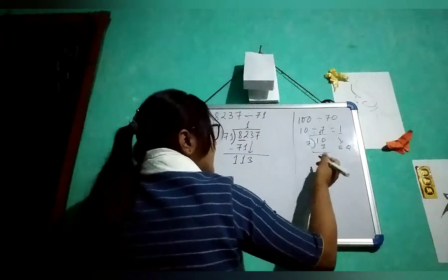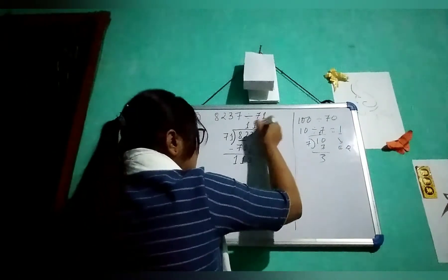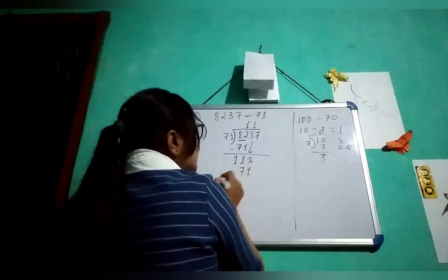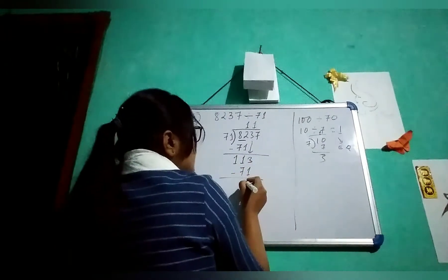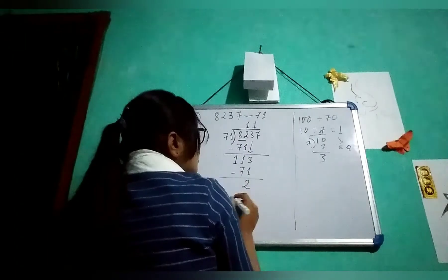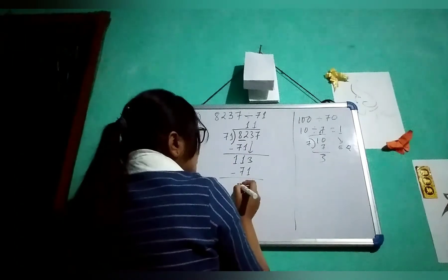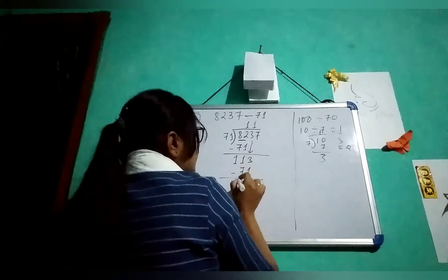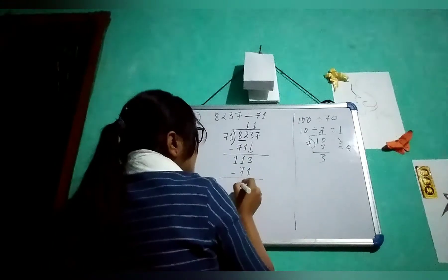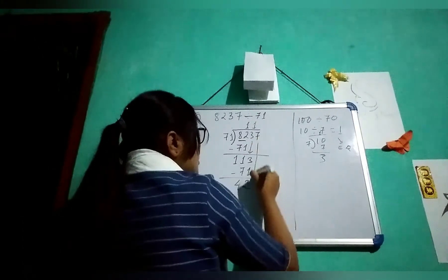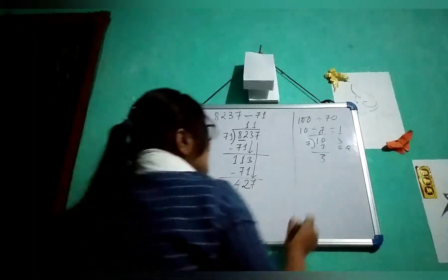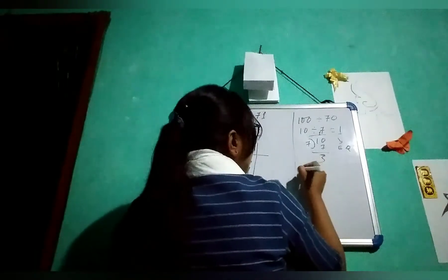If you multiply also, you will get the same. So I am taking 1. 71, if you do minus, you get 2 — so 11 minus 7 is 4, giving 42. Bring down that 7, so you have 427.